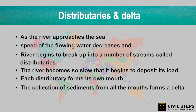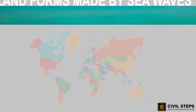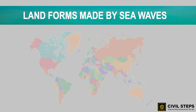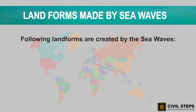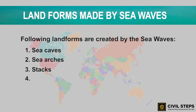That covers the various landforms made by the river: the waterfall, meanders, oxbow lake, flood plains and levees, and distributaries and delta. Now, landforms created by sea waves include sea caves, sea arches, stacks, sea cliffs, and beaches.